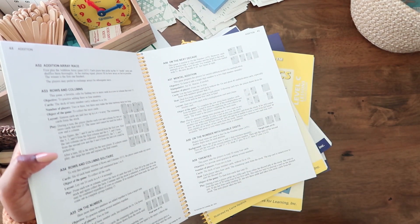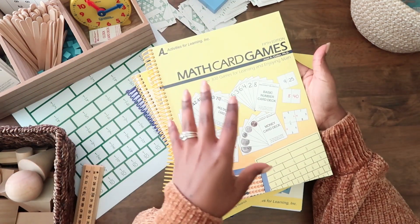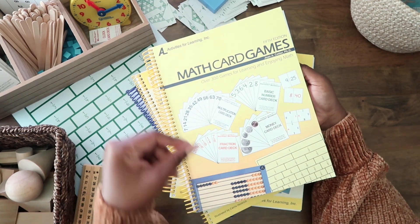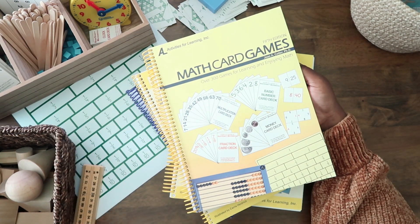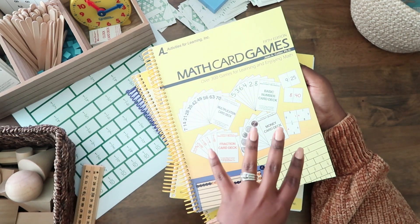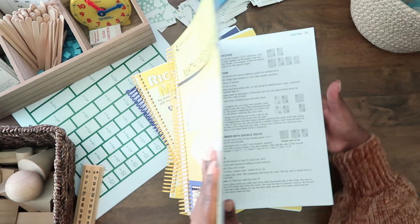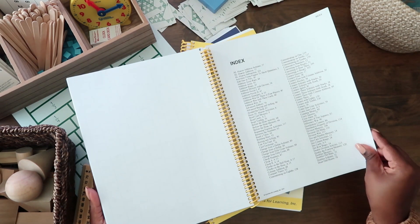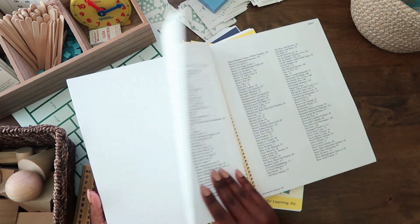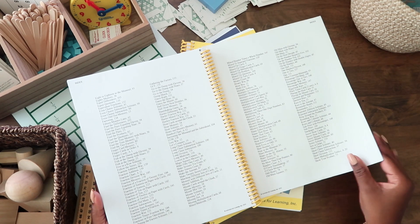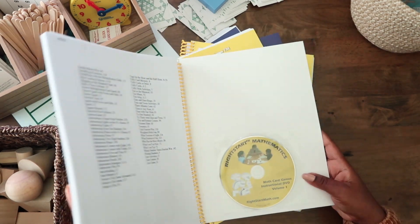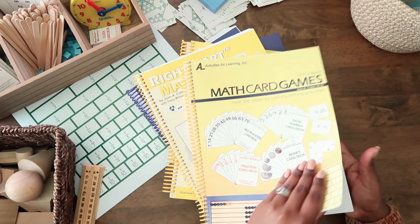And if you just wanted to purchase the games to go along with the current curriculum that you're using just to reinforce concepts, I think that would be perfect. You would just get the book and the cards and then use the index to find the game that would correlate with whatever you're studying, whether it be addition or remainders or multiplication. Again, whatever topic that you're covering to complement your lessons.